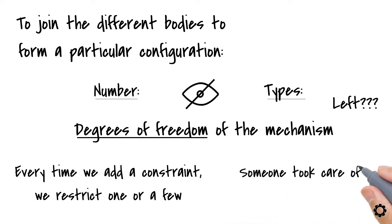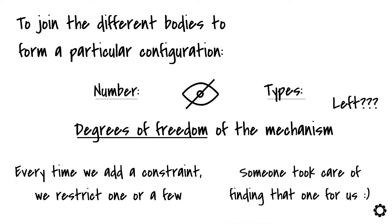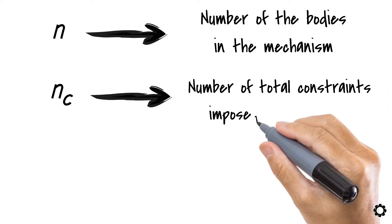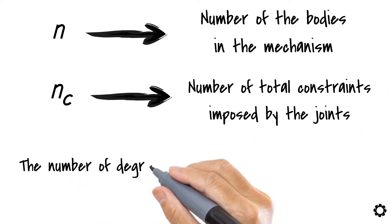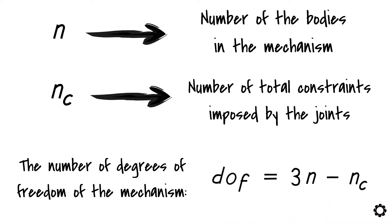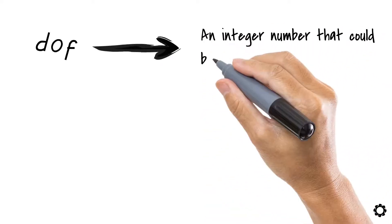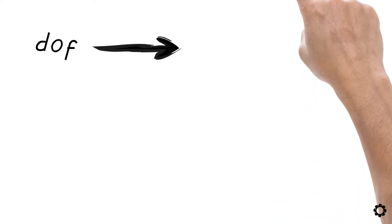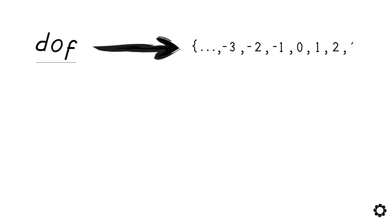How can we know then the number and types of degrees of freedom left? Someone has already taken care of finding that for us. The simple calculation goes like this: if n is the number of bodies in the mechanism and nc is the number of total constraints imposed by the joints, the number of degrees of freedom of the mechanism will be: degrees of freedom equals 3 times n minus nc. It is as simple as that.